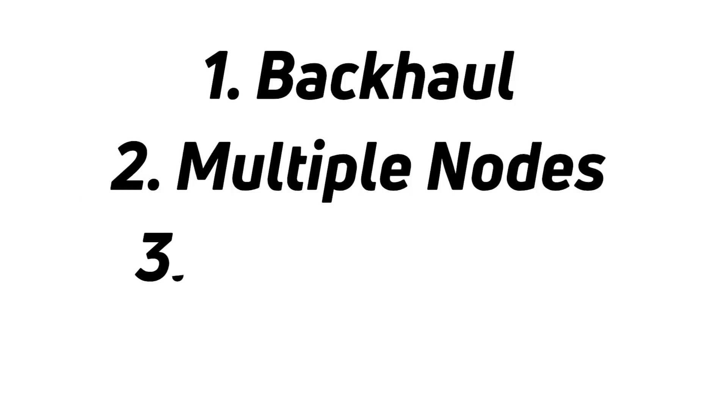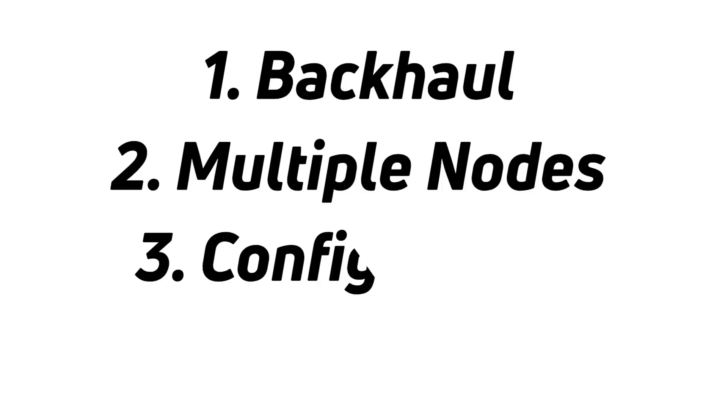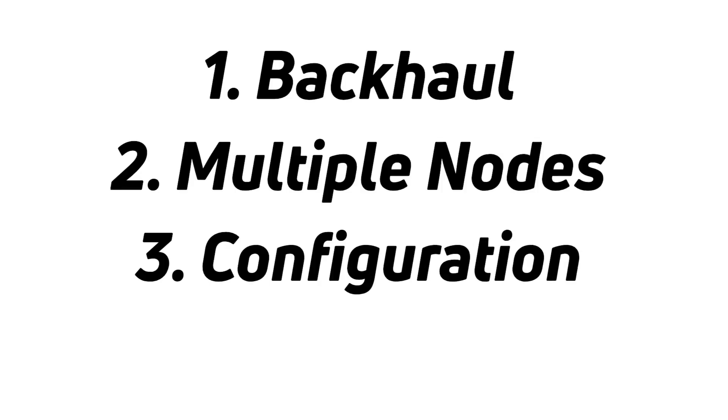The third point is configuration. Because the nodes are working in a group, are aware of each other, and intelligent software handles routing, that same software is also used for configuration. When you configure the network, you can do it through just one node, and that node is able to pass the new information on to the other nodes.